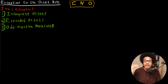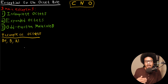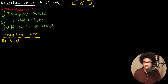We're going to look at examples of each one of these cases. Let's start with incomplete octets. Incomplete octets are pretty common amongst beryllium, boron, and aluminum — atoms that are further left on the periodic table and not very electronegative. These atoms tend to result in incomplete octets, especially when they're involved in bonds with really electronegative atoms. Let's look at the BCl3 molecule.